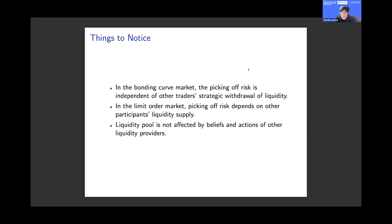In the bonding curve market, because you receive a receipt for submitted liquidity and withdraw proportionally to what's in the market, the adverse selection and other effects you face are independent of what other people are doing. This means there's less incentive to be strategic compared to a limit order market.